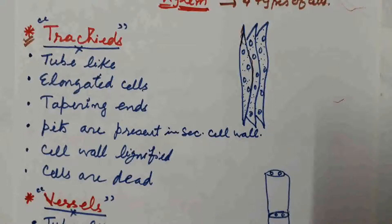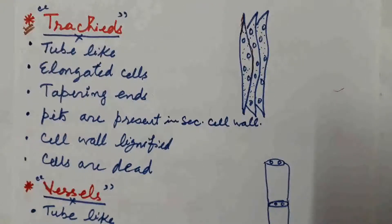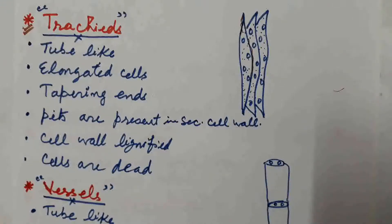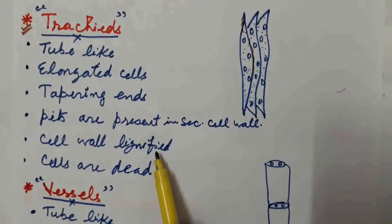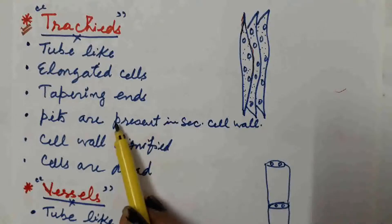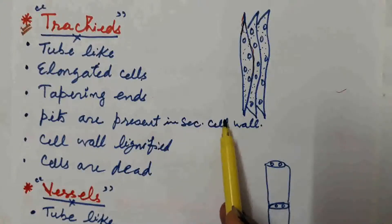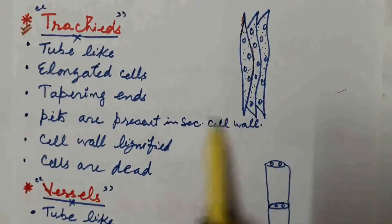Pits are present in the secondary cell wall of tracheids. The plant cell wall has a primary cell wall and a secondary cell wall. The whole secondary cell wall is thickened due to deposition of lignin, except for certain thin-walled areas where lignin is not deposited — those unthickened areas are known as pits. So pits are present in the secondary cell wall in case of tracheids.